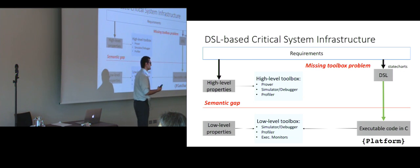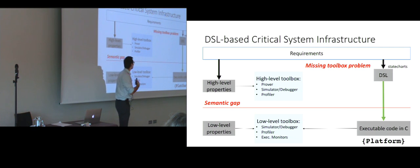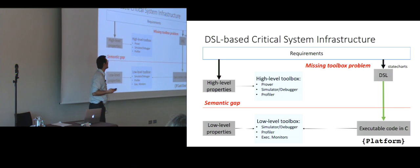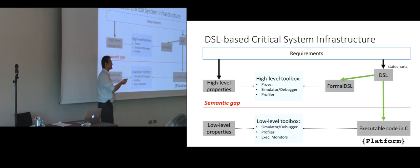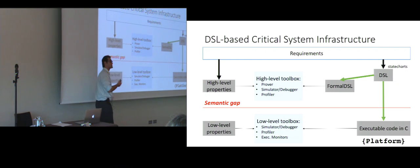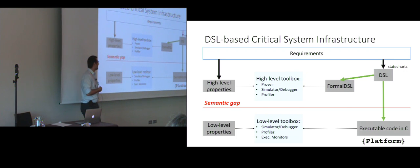With a typical simple DSL that we start to write in our garage, we'll have the problem that we have this missing toolbox problem. One possible solution is to introduce a transformation from this DSL to a formal DSL which has a connection with these tools, for which these tools are available.